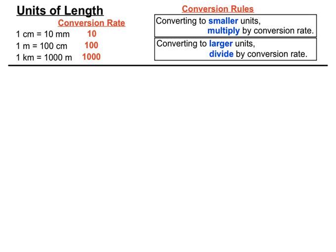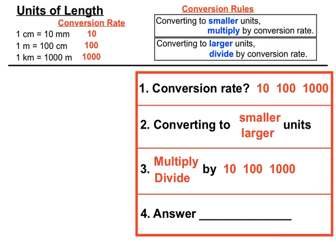We'll keep the conversion rates and those two rules handy at the top to refer to: if we're converting to smaller units we'll multiply, if we're converting to larger units we'll divide. For each question, we'll think about which conversion rate applies depending on which units we're working with, and whether we're converting into smaller or larger units — that'll tell us whether to multiply or divide.